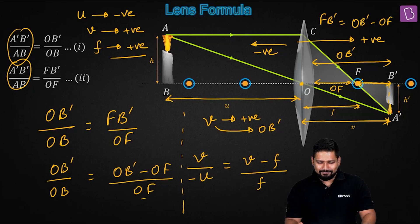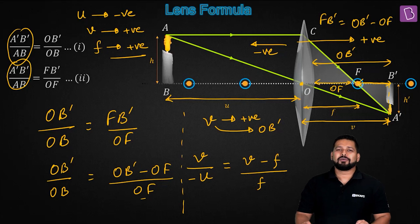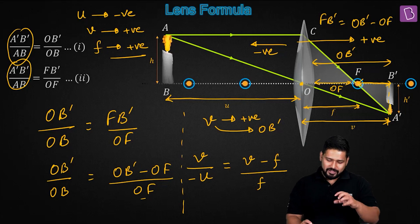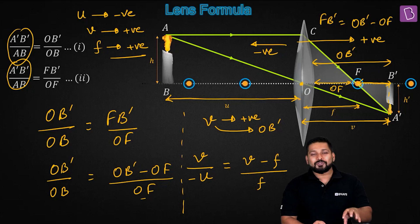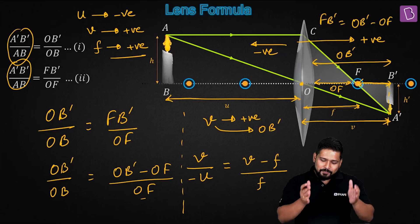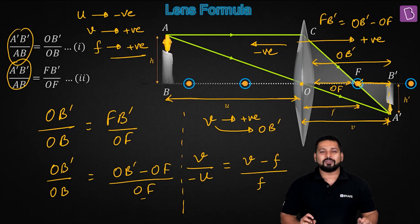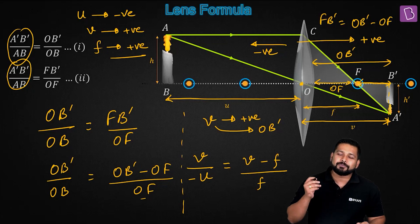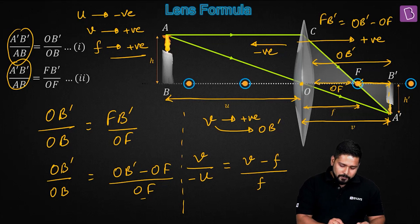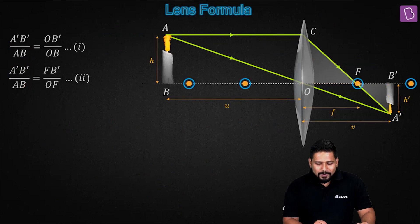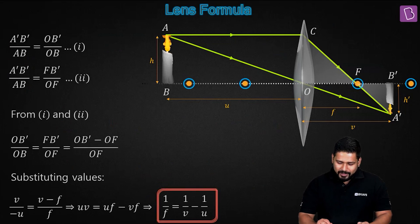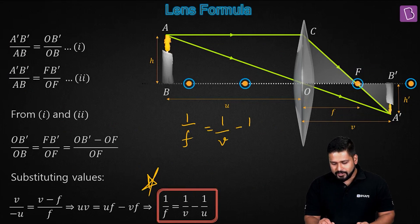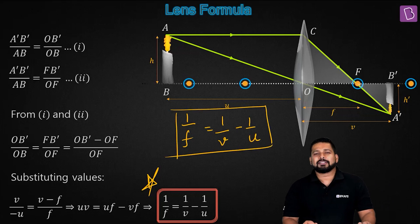Cross-multiplying and simplifying, we obtain the thin lens formula: 1/f = 1/v − 1/u. All the key steps — identifying the similar triangles, proving similarity, applying sign convention, and substituting OB', OB, and OF — must be understood clearly. This result is called the thin lens formula.